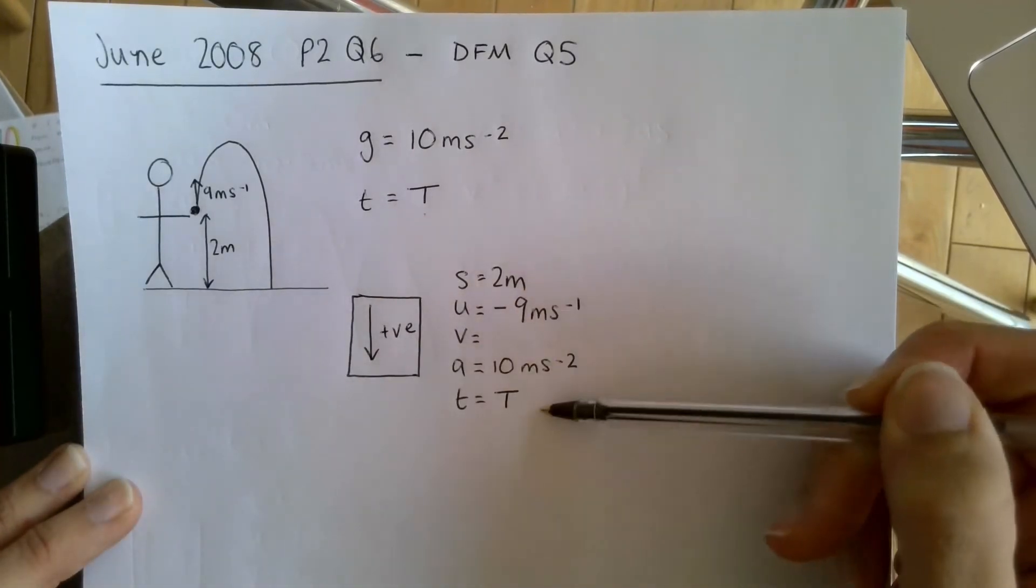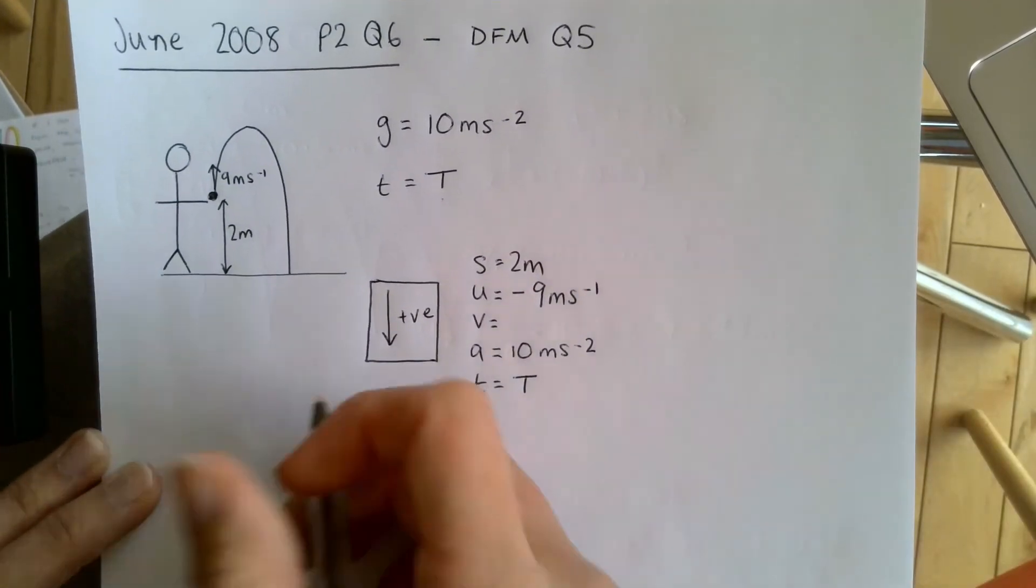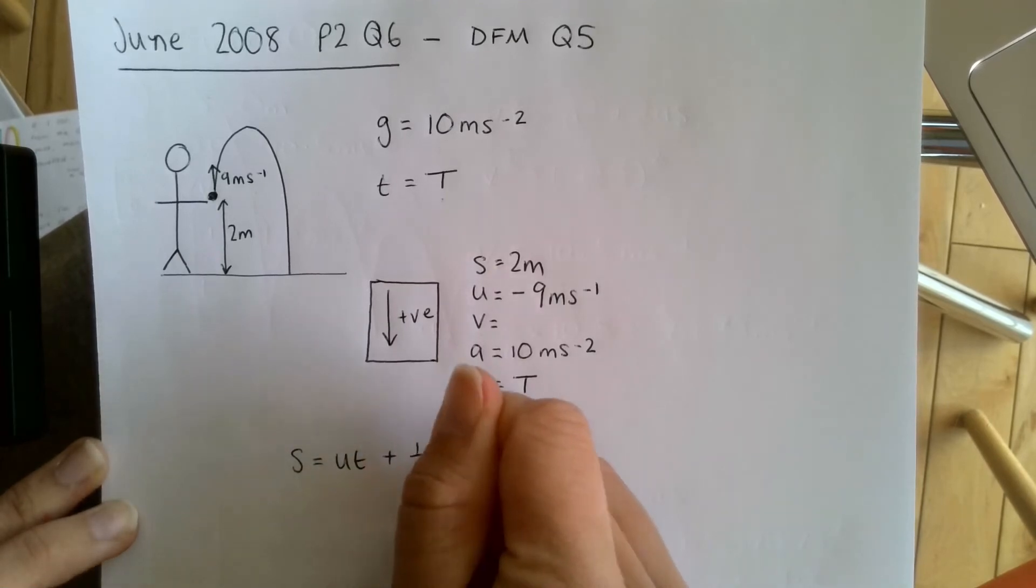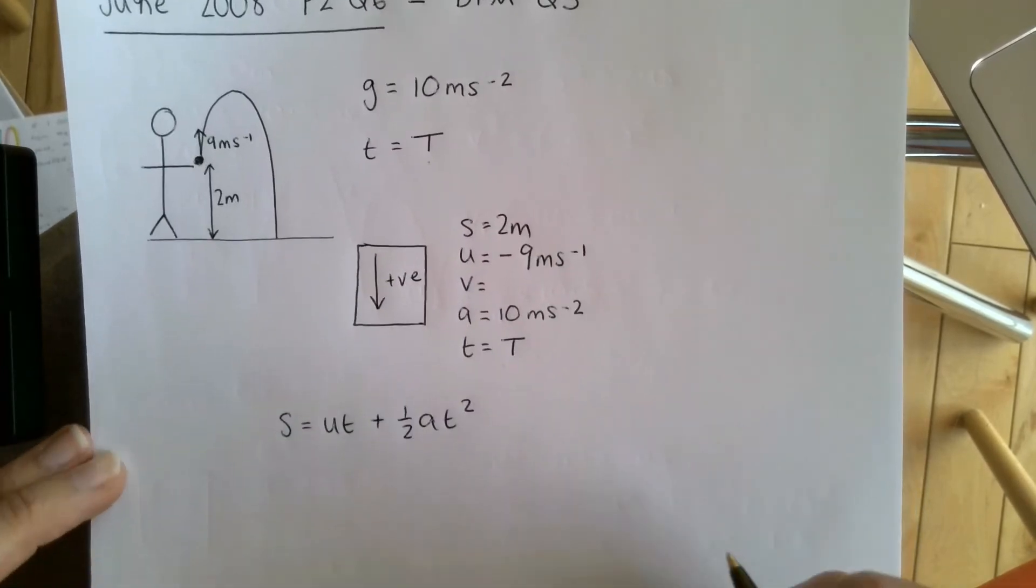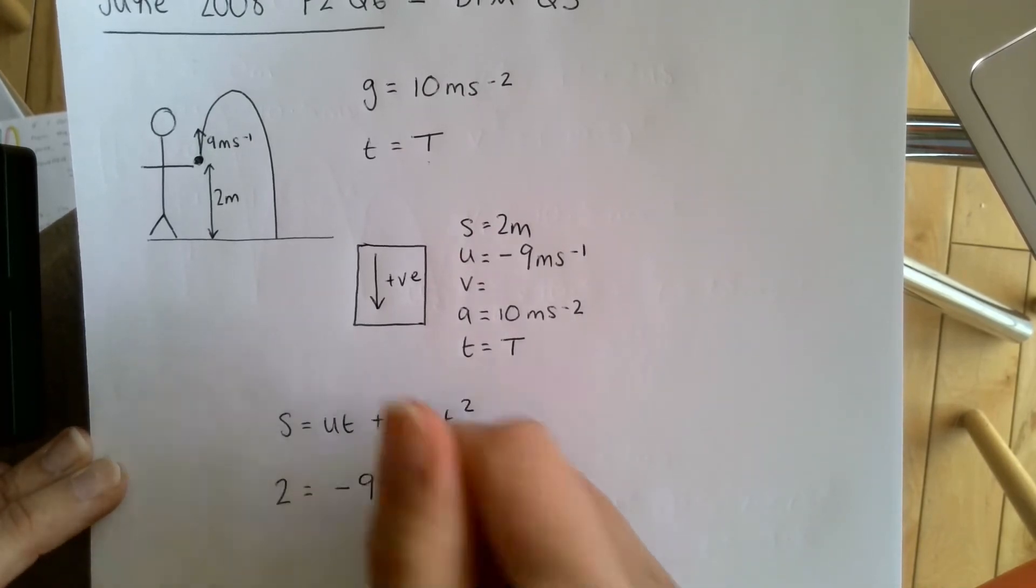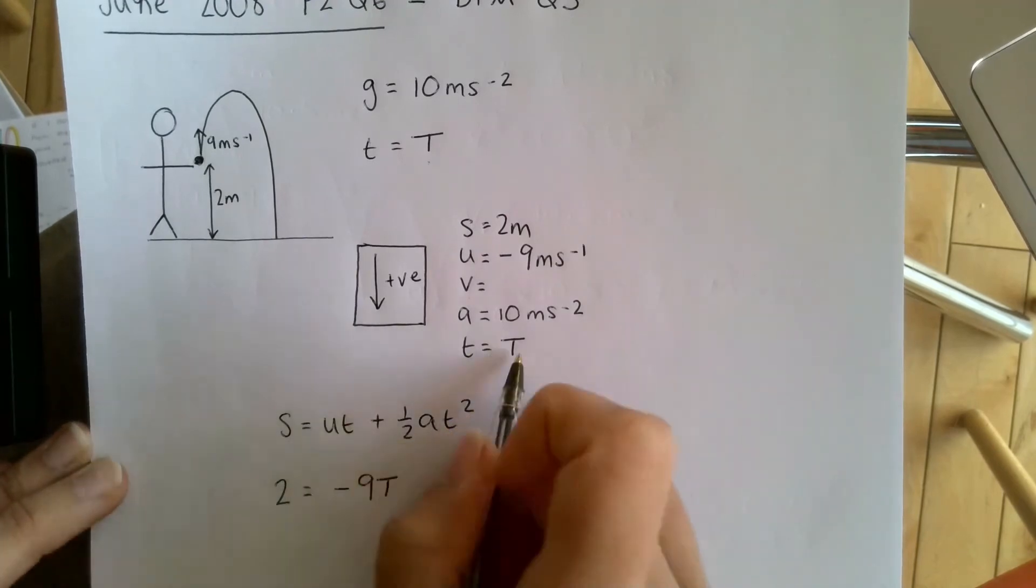I've got S-U-A and I'm looking for T, so I'm going to use S equals UT plus a half AT squared. So what do I know? Well I know two is S, U is negative nine. I'm going to put a capital T because that's what we're using here, it's what we're trying to solve for.